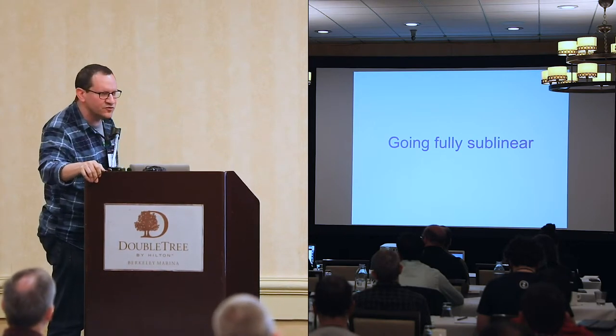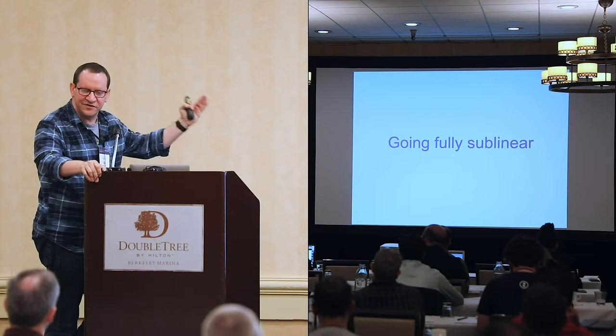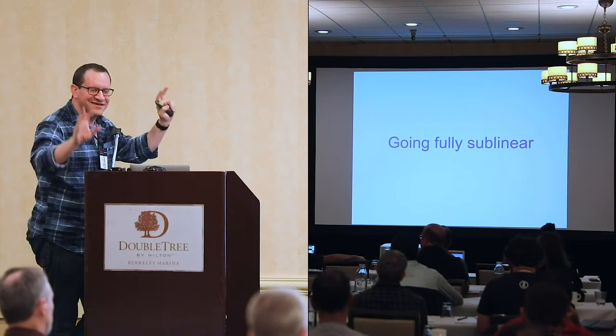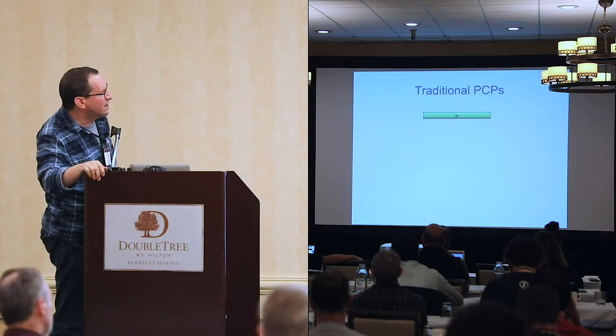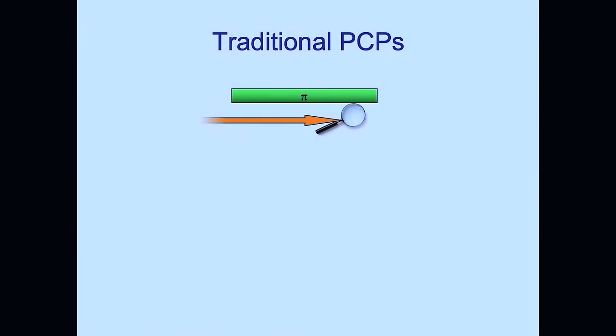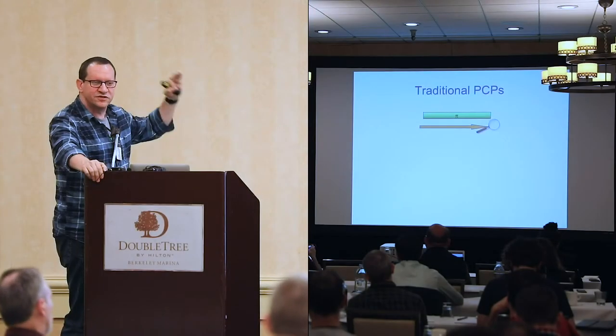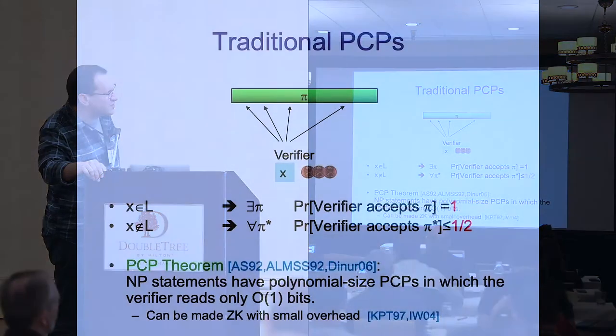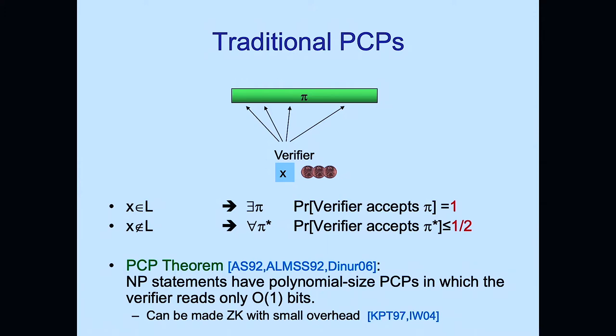In the remaining time: how do we get full succinctness, making the proof size polylogarithmic or even constant? Recall the traditional notion of probabilistically checkable proofs (PCPs): an alternative to standard proofs, PCPs have the magical property that you can verify them with very high soundness by reading just a small number of bits from the proof.